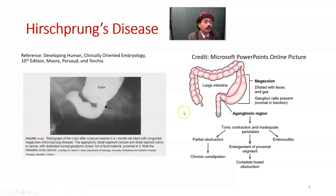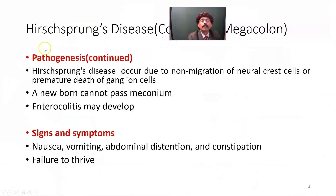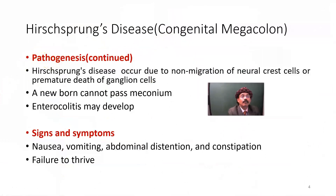For treatment, the surgeon cuts the aganglionic part and pulls the normal colon down to the anus. Hirschsprung's disease occurs due to non-migration of neural crest cells or premature death of ganglion cells. For any of these reasons, a newborn cannot pass meconium, and enterocolitis may develop.